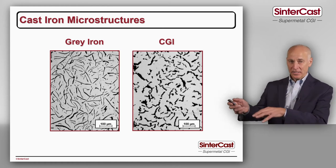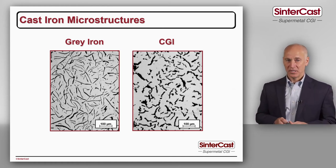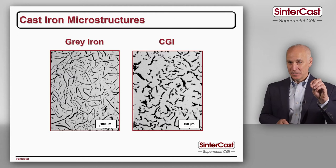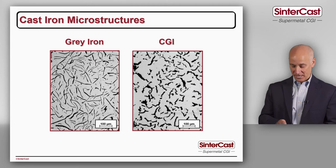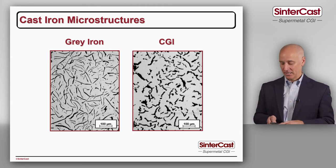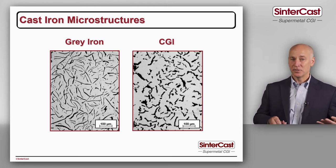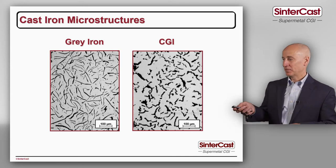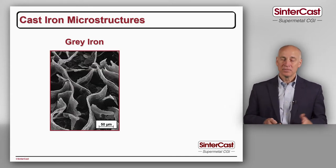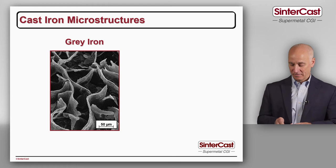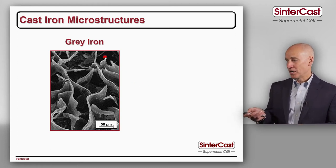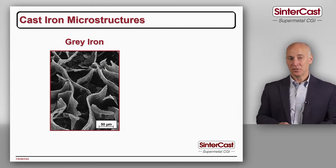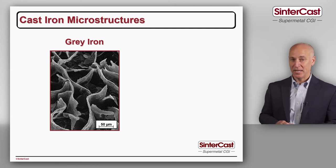To look at the graphite particles in more detail, we can dip the iron into acid — it dissolves the iron but the graphite stays. Then we can look in a scanning electron microscope and see the true three-dimensional shape of the graphite. For grey iron we can see these graphite flakes with very sharp edges, and this is the stress concentration that can allow a crack to begin.